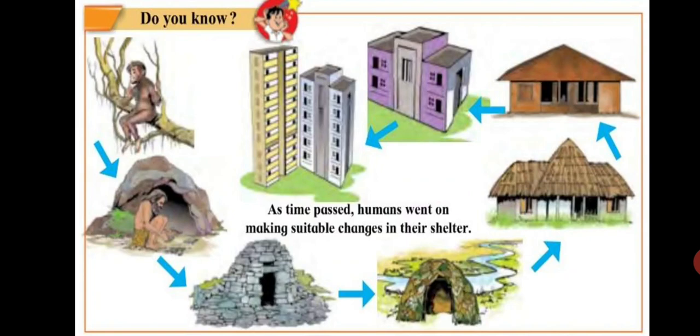As time passed, humans went on making suitable changes in their shelter. The picture shows us right from the apes, where early human beings lived on trees in a forest. They made some progress and started living in caves. Later, stones were used for construction, then thatched roofs came, bricks were used later, then buildings. We can see how man made progress not only in his physical appearance but also in his eating habits and his shelter as well.